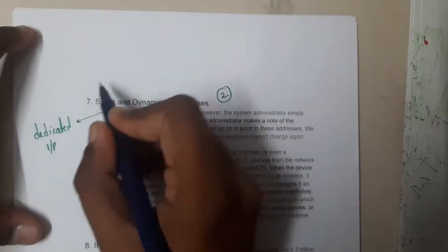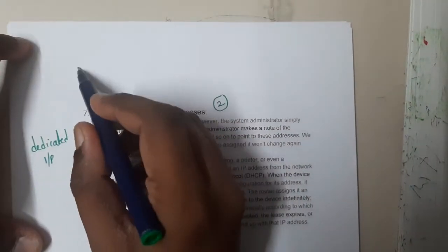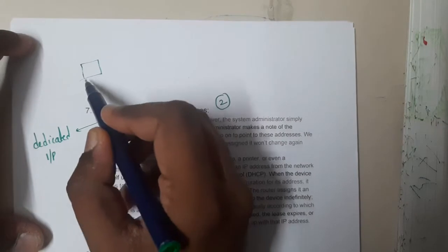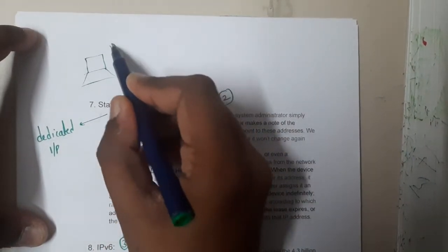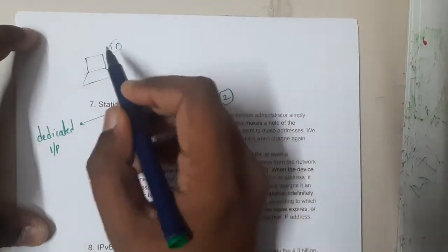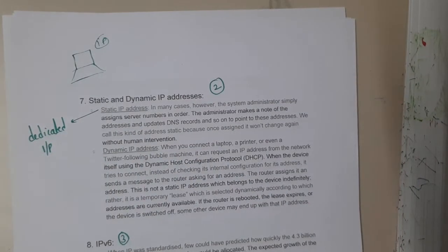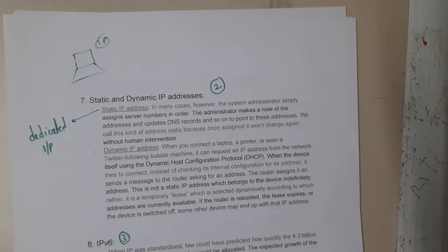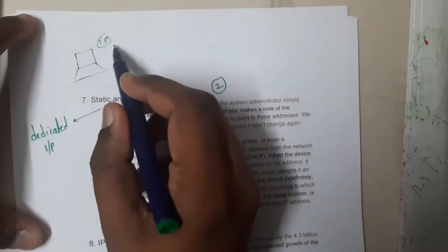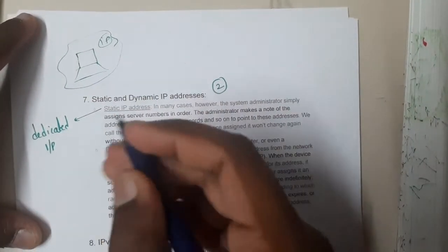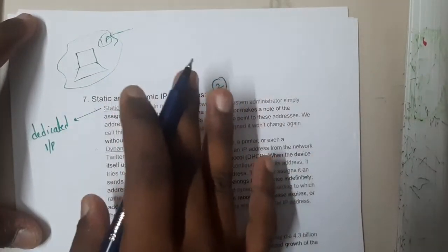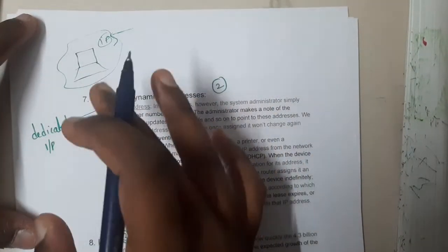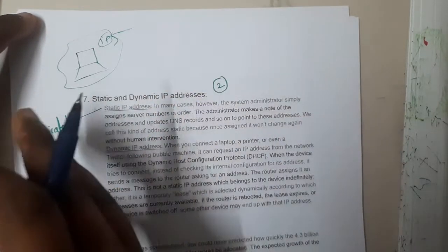Basically, whenever you take a system, in the initial stages we used to manually enter the IP addresses. Each and every system will have its own unique IP address, because whenever you want to connect to the internet you are required to have an IP address, otherwise you cannot connect. This IP address must be unique if you want to transfer and receive data.